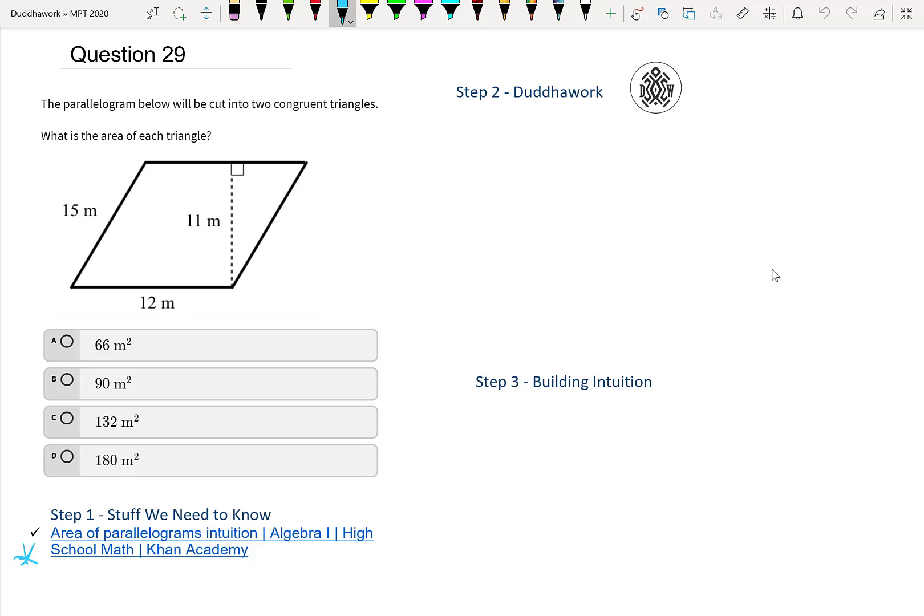So what we have here is a parallelogram. We know to find the area its base times height where this is the height, not this. This is not the height, right? 15 meters is not the height. It's like a regular triangle. It's the vertical perpendicular to the base. That's the height.